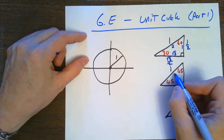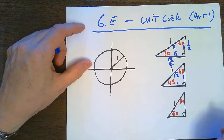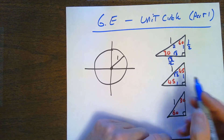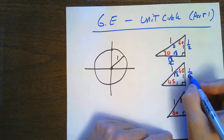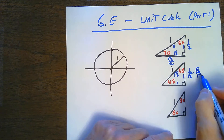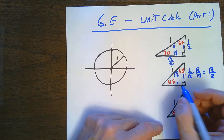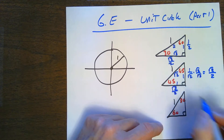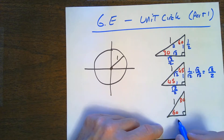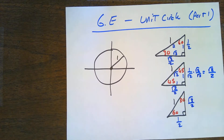In the 45-45-90 triangle, the sides are 1, 1, and √2. To make the hypotenuse 1, I divide by √2, giving 1 over √2. Rationalizing by multiplying by √2 over √2 gives √2 over 2. Both legs are √2 over 2. The second 30-60-90 triangle is the same, just with the sides in a different position: one-half and √3 over 2.